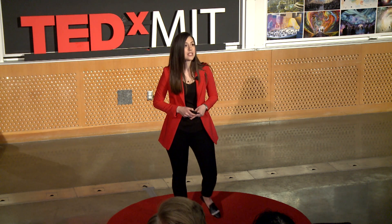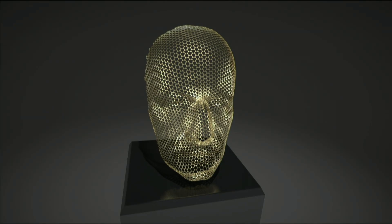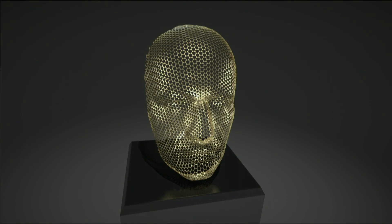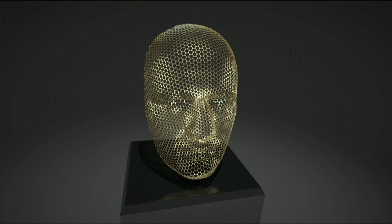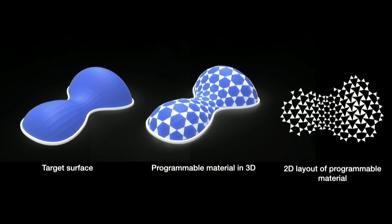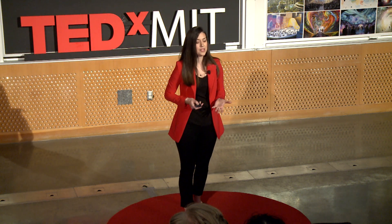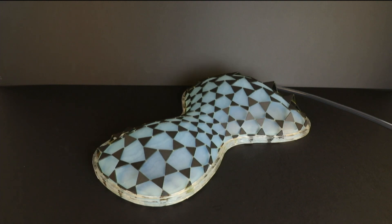Another interesting property of auxetic materials is that they're also transformable — with a single piece of material you can approximate many different shapes. This inspired our next research question: to design a new class of materials we call programmable auxetics. The idea is that given a target shape, we program a 2D material to approximate exactly that 3D shape once inflated. We are encoding a three-dimensional surface into a flat sheet of material, and then we simply inflate it to its maximum and it goes to the prescribed shape.